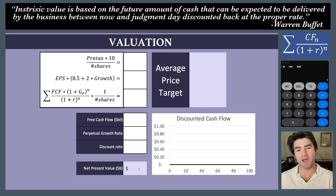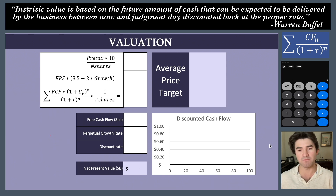Welcome back. We're doing a video on how to do a discounted cash flow. This is my valuation screen. Most people are familiar with it from my individual stock videos — my pre-tax income times 10 is just my rule of thumb method, the second one is a formula from Ben Graham and The Intelligent Investor, and the last one is the DCF. I've said before that it's too complicated to do on a calculator.